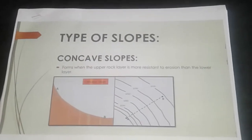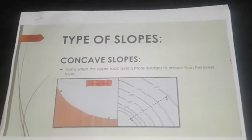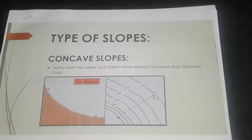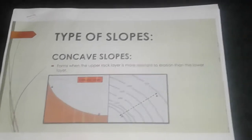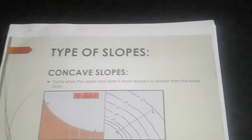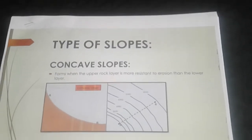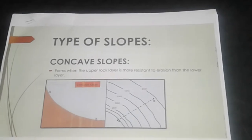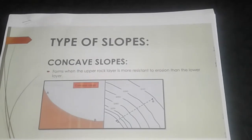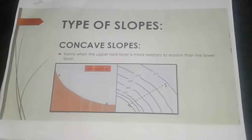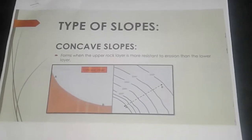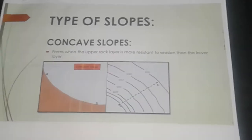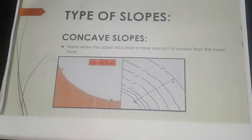Steep slopes are indicated by our scarp slopes, where the contour lines are very, very close together. Now I'm going to start with the concave slopes — the ones that you're not very familiar with.